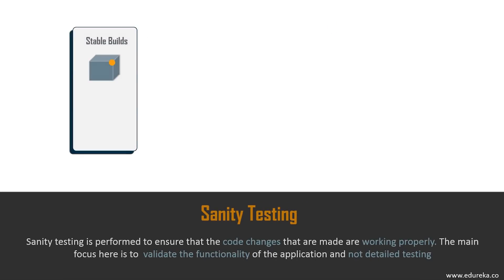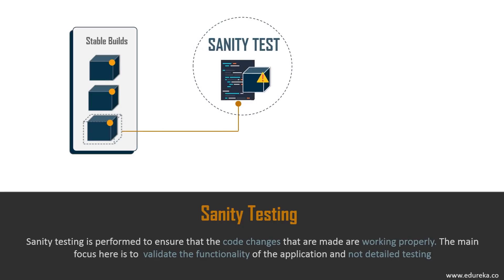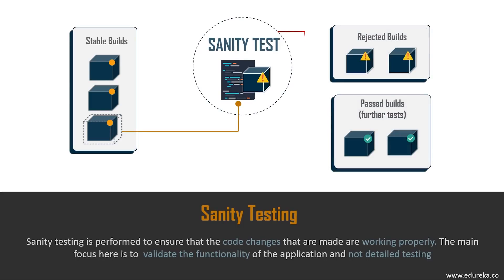Here's a basic representation of sanity testing. There are three builds sent for sanity testing. Sanity testing is performed on them to check if any new features or changes are made, whether they have affected existing features, and whether bugs were fixed. If the builds pass the sanity test, they are sent for further rounds of testing; otherwise, they are rejected and added to the rejected build list.